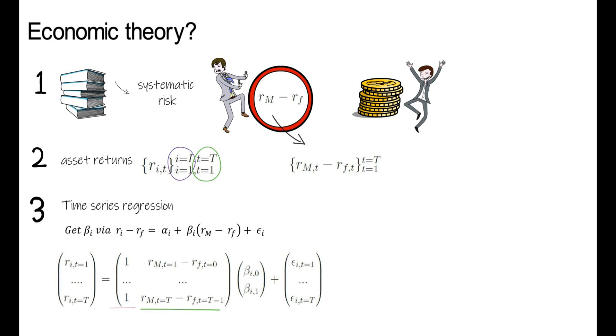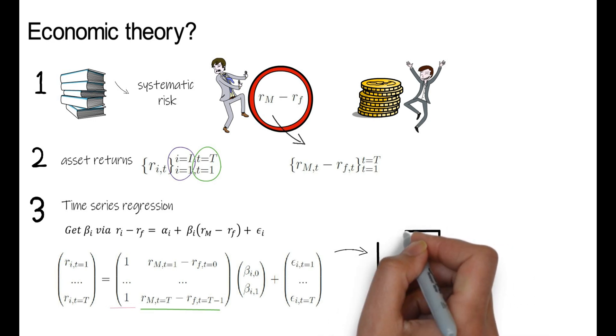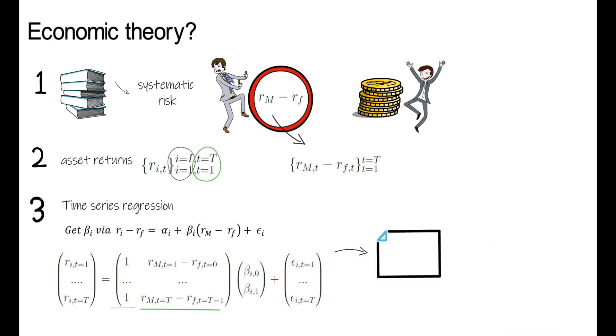We will recover beta I0, beta I1 and the epsilon shocks. Now remember, if the data supports the OLS assumptions, you can rely on OLS to estimate the beta coefficients.